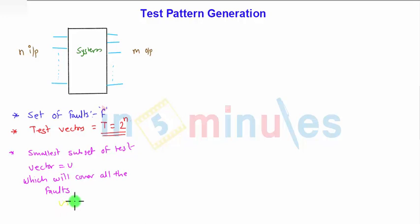So what is my requirement? I can at least find out 98% of the faults should be detected with this smallest subset of the test vector V. This should find out all the faults, or minimum 98% of the fault should be found out by the smallest test vector. This is my approach towards the pattern generation.